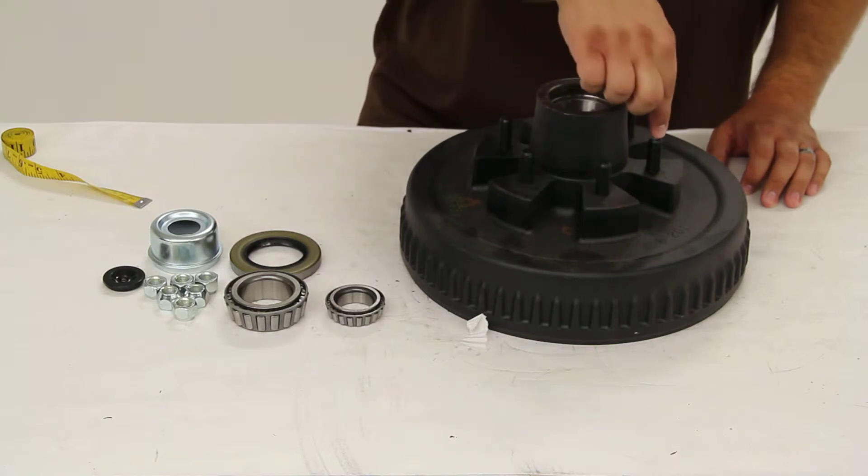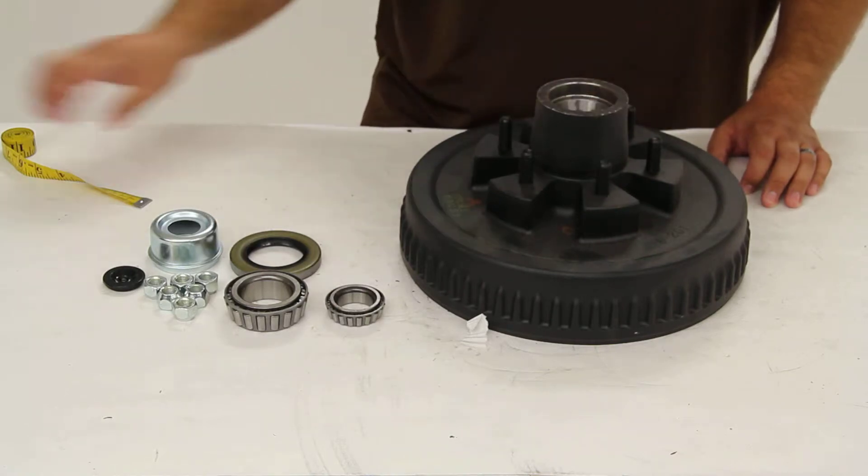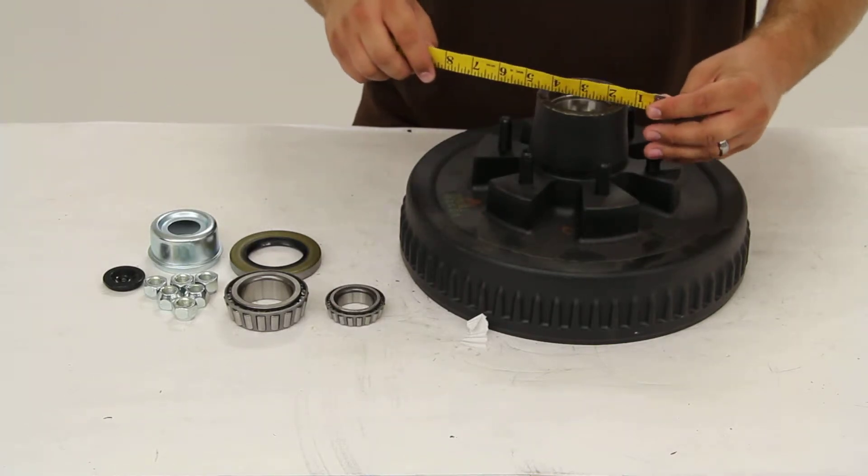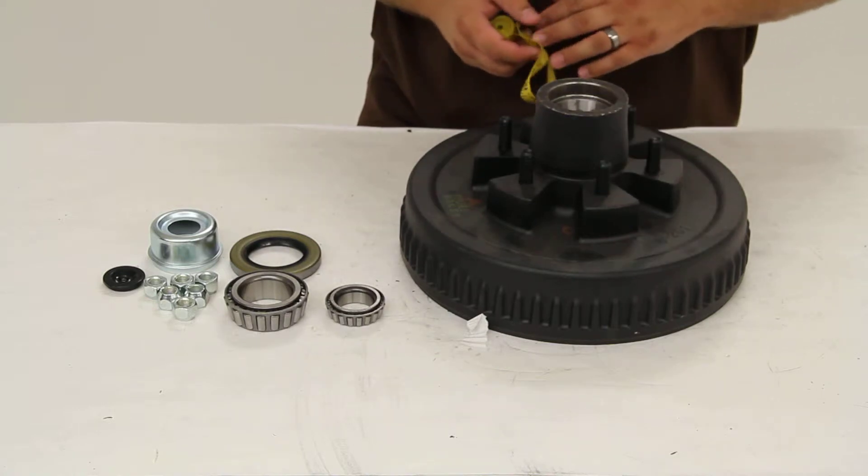We count the studs, we'll get 6, and if we were to measure across from one stud directly across to another, we'd get our 5 1/2 inches.